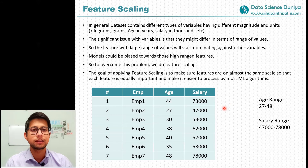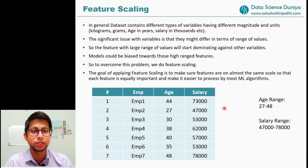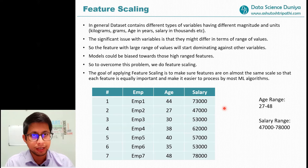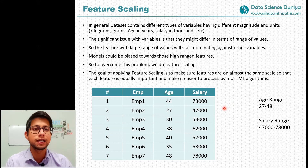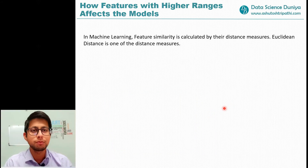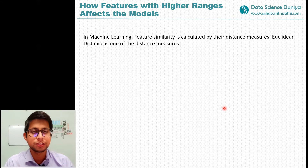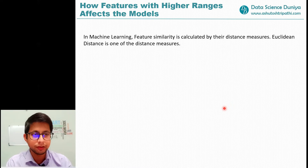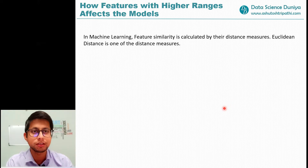In machine learning, we need to identify if there is a correlation — which features are correlated to each other, calculated via correlation coefficient. Similarly, if you want to identify if two features are similar to each other, there are certain distance measures. Algorithms which work based on distance measures are mostly affected by a high range of features.